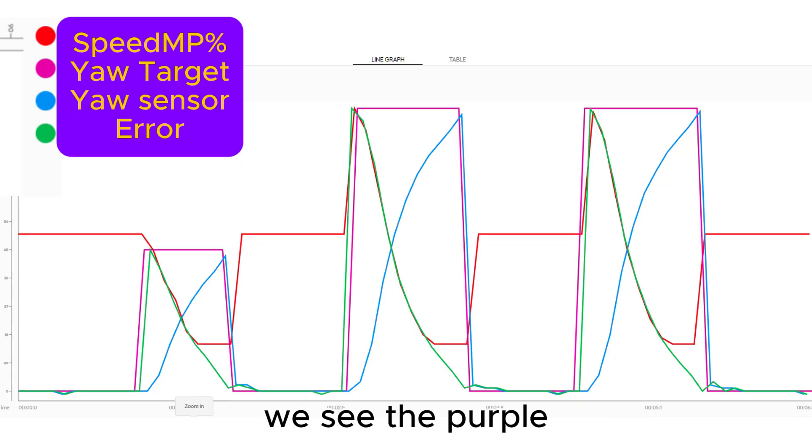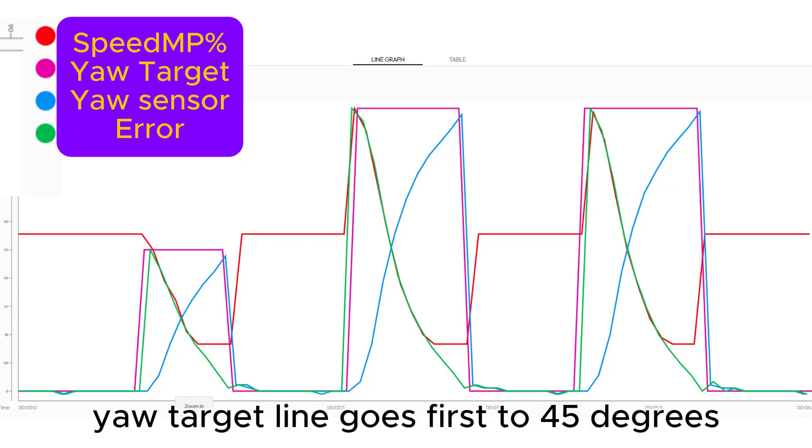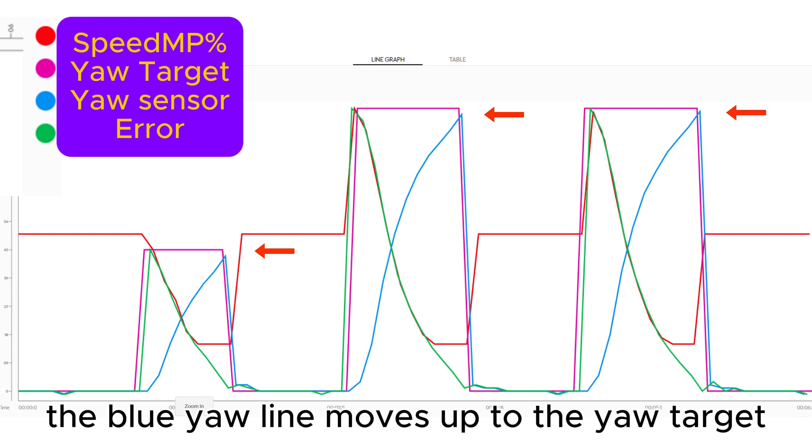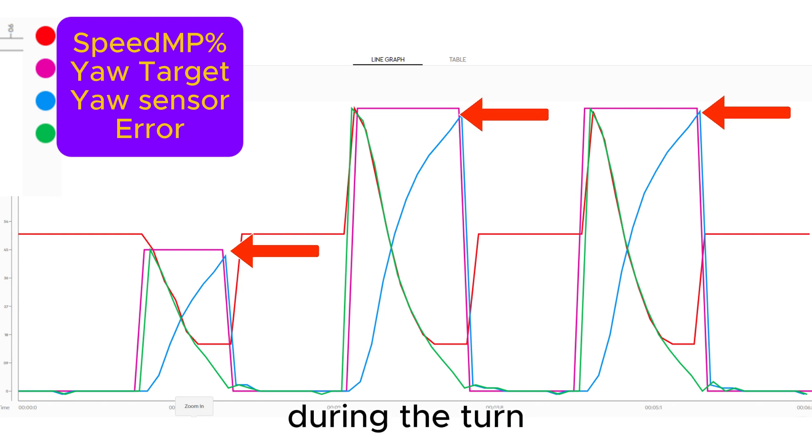Looking at the line graph, we see the purple yaw target line goes first to 45 degrees and then twice to 90 degrees. The blue yaw line moves up to the yaw target during the turn.